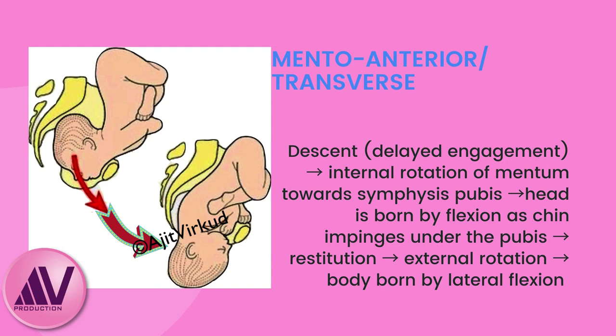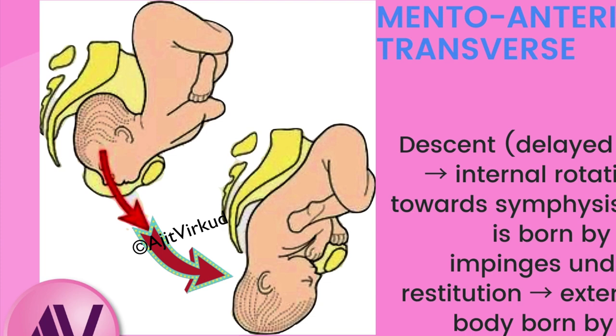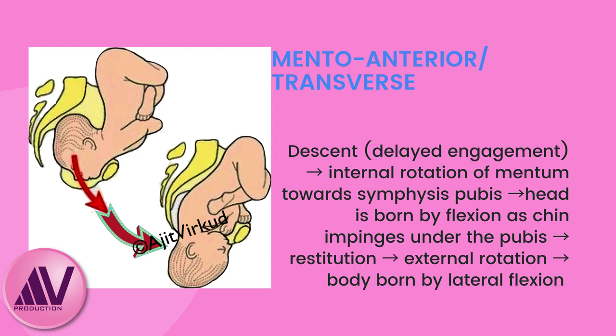Mechanism of labor in mento-anterior or transverse position is as follows. In the presence of adequate pelvis and good uterine contractions, the following cardinal movements take place: first there is descent; next there is internal rotation of mentum toward symphysis pubis. Following internal rotation, the mentum is below the maternal symphysis. As the face descends onto the perineum, the anterior fetal chin passes under the symphysis and flexion of the head occurs, making delivery possible with maternal expulsive forces. This is followed by restitution, external rotation, and lastly body is borne by lateral flexion.